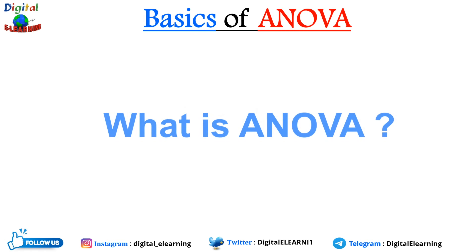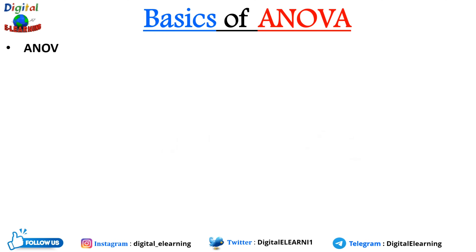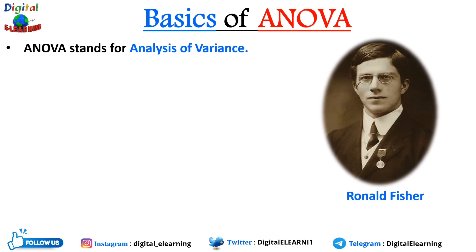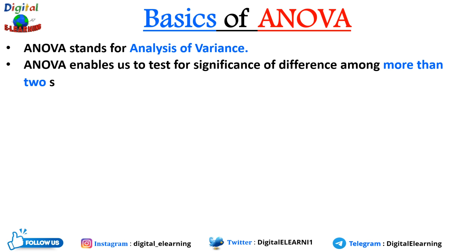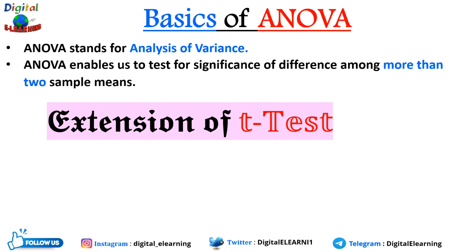So what is ANOVA? ANOVA stands for Analysis of Variance — it was developed by Ronald Fisher. ANOVA enables us to test for significance of difference among more than two sample means. It is basically an extension of the t-test and allows us to move beyond just comparing two population means. When we only have two samples, t-test and ANOVA will give you the same results.